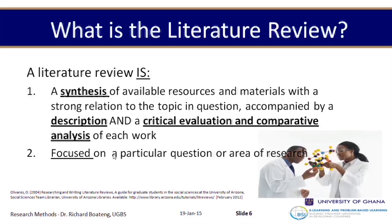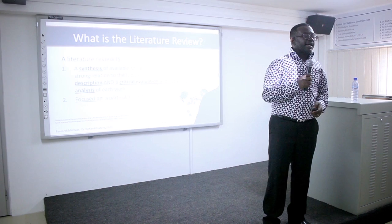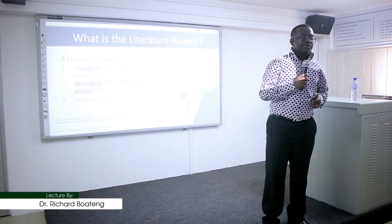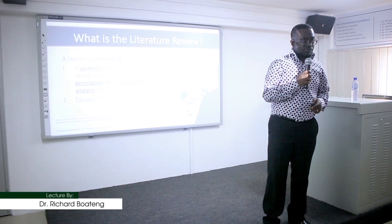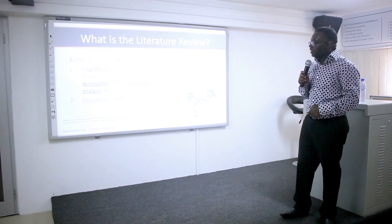Whatever resources you pick, they must have a strong relation with the topic in question. If you are doing research on corruption and public administration, you can't go and read about fishing under the sea unless you want to talk about the fishing industry and corruption. You must be sure that the literature review is focused on the topic you're researching, and the articles you pick must have a relationship with that topic.